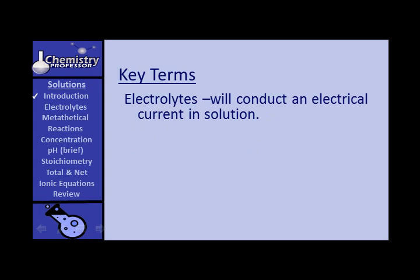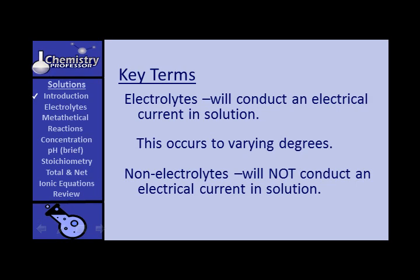More key terms are electrolytes. Electrolytes are substances that will conduct an electrical current in solution or when mobile — for example, when molten. We generally think of electrolytes as substances that conduct an electrical current when dissolved, but you need to know this can occur to varying degrees. Some things can really dissolve a lot and produce a lot of electrical current in solution; other things, not so much.